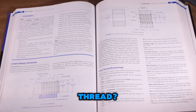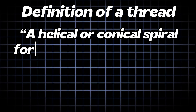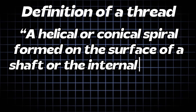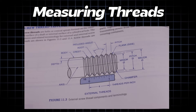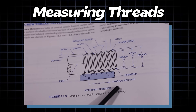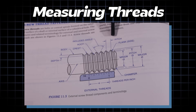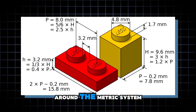What even is a thread? The technical definition is a helical or conical spiral formed around the surface of a shaft, or the internal surface of a cylindrical hole. Think of a screw. Threads are measured and determined in a few different ways. For imperial threads, one common way is by the TPI, or threads per inch. For metric threads, a common method is by the pitch, or the distance from crest to crest. Since Lego parts are based around the metric system, that's what we're going to use.